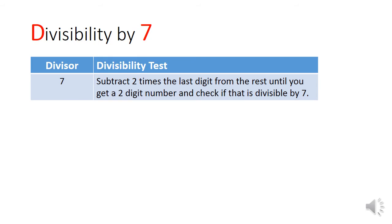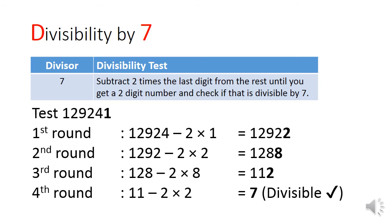Let's take an example. The number 129,241. We first take the first 5 numbers, 1, 2, 9, 2, 4, and subtract 2 times the last digit, 1. You get 12,922. Then you take 1, 2, 9, 2, and minus 2 times the last digit, 2, and you get 1,288. Then you take 1, 2, 8, minus 2 times the last digit, 8, you get 112. You can do this one more time, and you'll get 7, which is obviously divisible by 7. So 129,241 will also be divisible by 7.